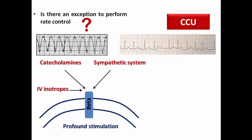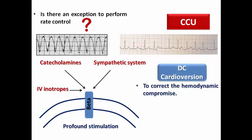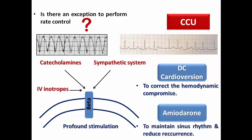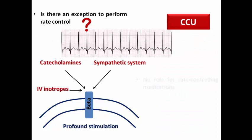But is there an exception to perform rate control? In the case of VT or rapid AF, these arrhythmias are adding to the hemodynamic compromise if they are not directly responsible for the shocked state. Here you need to give synchronized DC cardioversion to correct the hemodynamic compromise, and then you may need to give amiodarone to maintain sinus rhythm and reduce recurrence. This is an exception because we are speaking about malignant tachyarrhythmias — but for sinus tachycardia, there is no role for rate controlling medication.